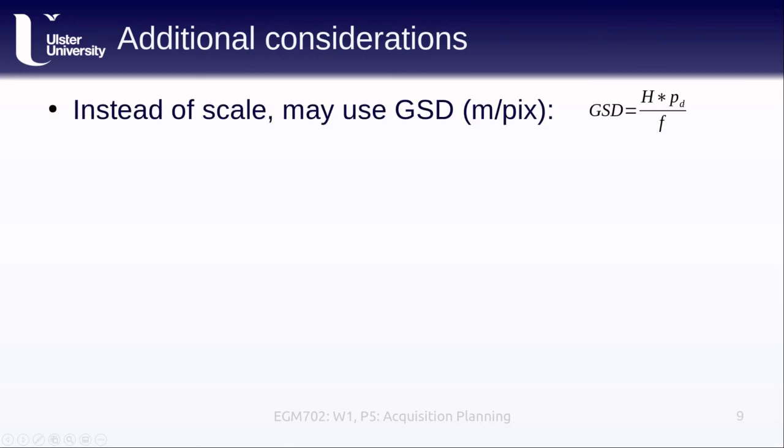Additional considerations that we might have: instead of using scale, I mentioned that we might use the ground sampling distance, and the ground sampling distance can be calculated by the physical pixel size multiplied by the height, the flying height, divided by the focal length. Of course, this means that we need to know the physical pixel size, and you can usually calculate this by taking the size of the sensor divided by the number of pixels in either the x or the y direction.